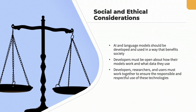At the same time, it is essential to recognize that the responsible and ethical use of AI and language models is a shared responsibility. Developers, researchers, and users must work together to ensure that these technologies are used in a way that is respectful of human dignity, privacy, and autonomy. Ultimately, the success of AI and language models depends on our ability to balance technological progress with ethical considerations. By working together and prioritizing transparency, trustworthiness, and responsible use, we can create a future in which these technologies benefit society as a whole.